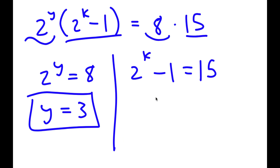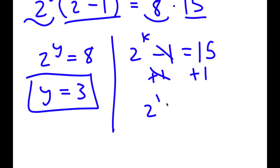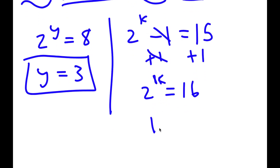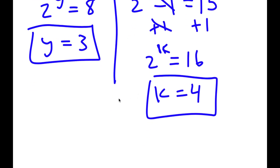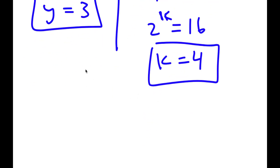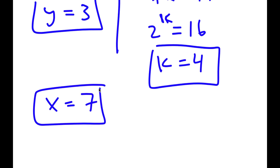For 2 to the power of k minus 1 equals 15, add 1 on both sides: I get 2 to the power of k is equal to 16, meaning k is 4. Now that we have y and k, remember x is equal to k plus y, meaning x equals 4 plus 3, which is 7. So these are my solutions.